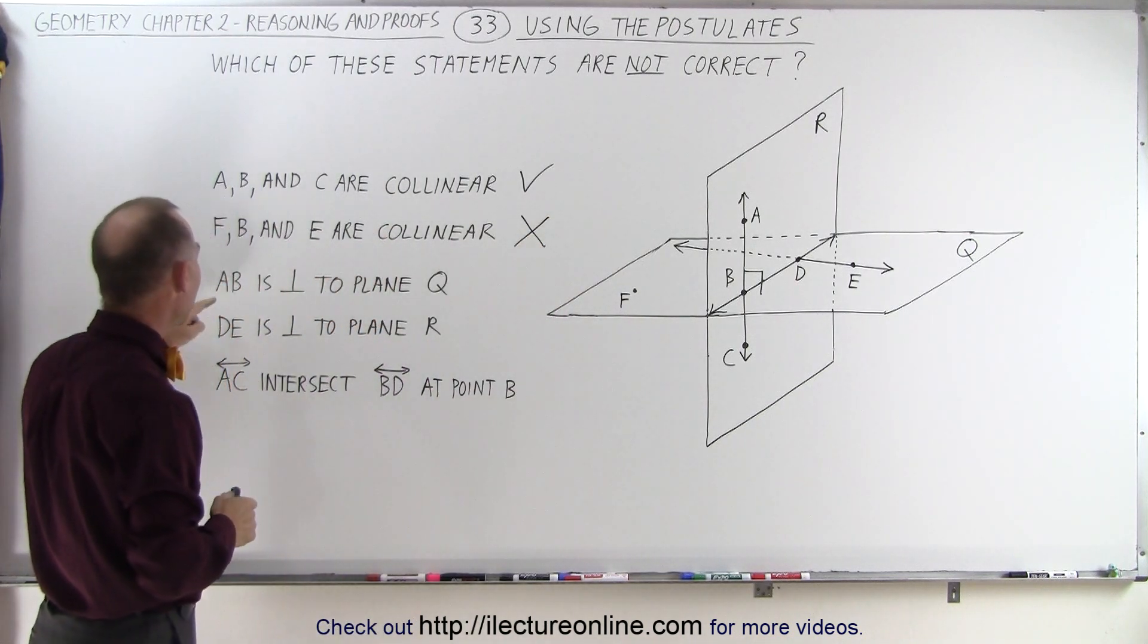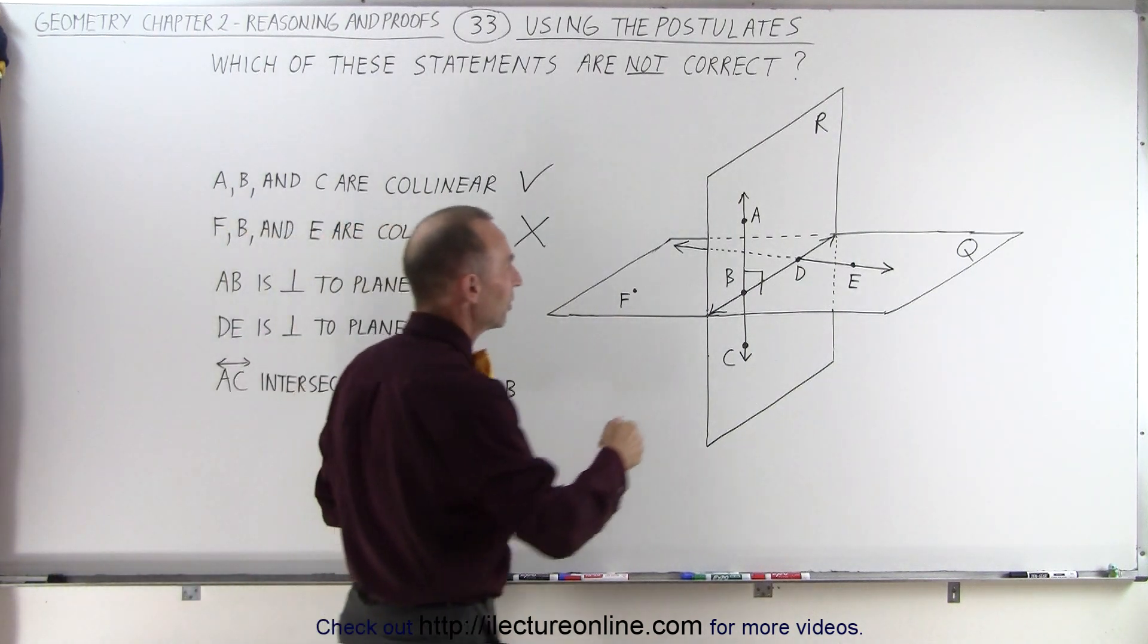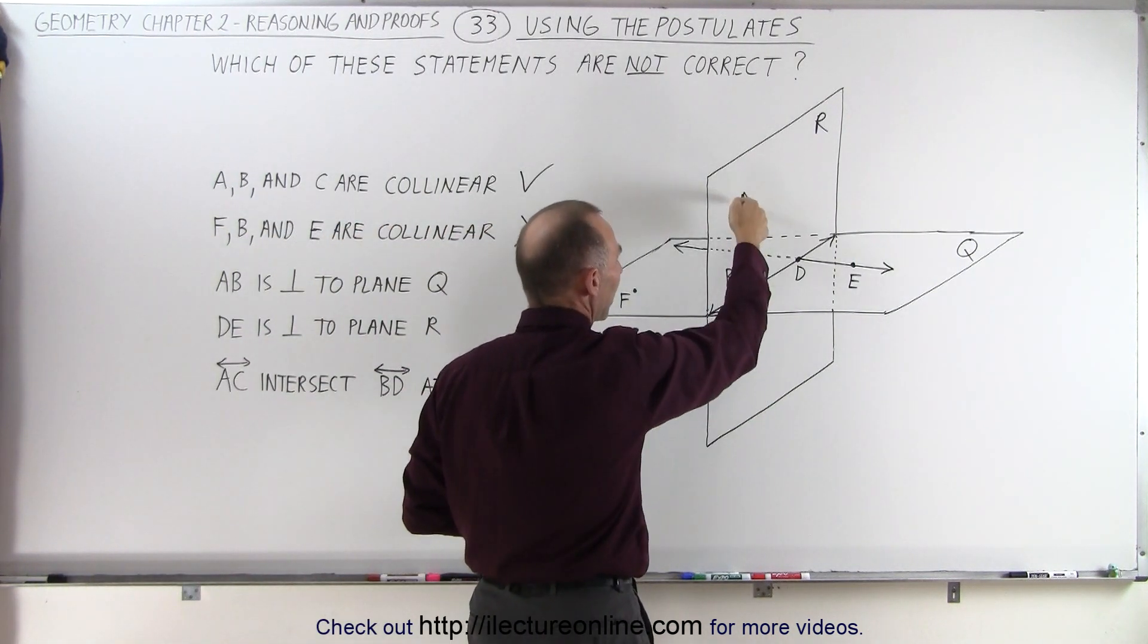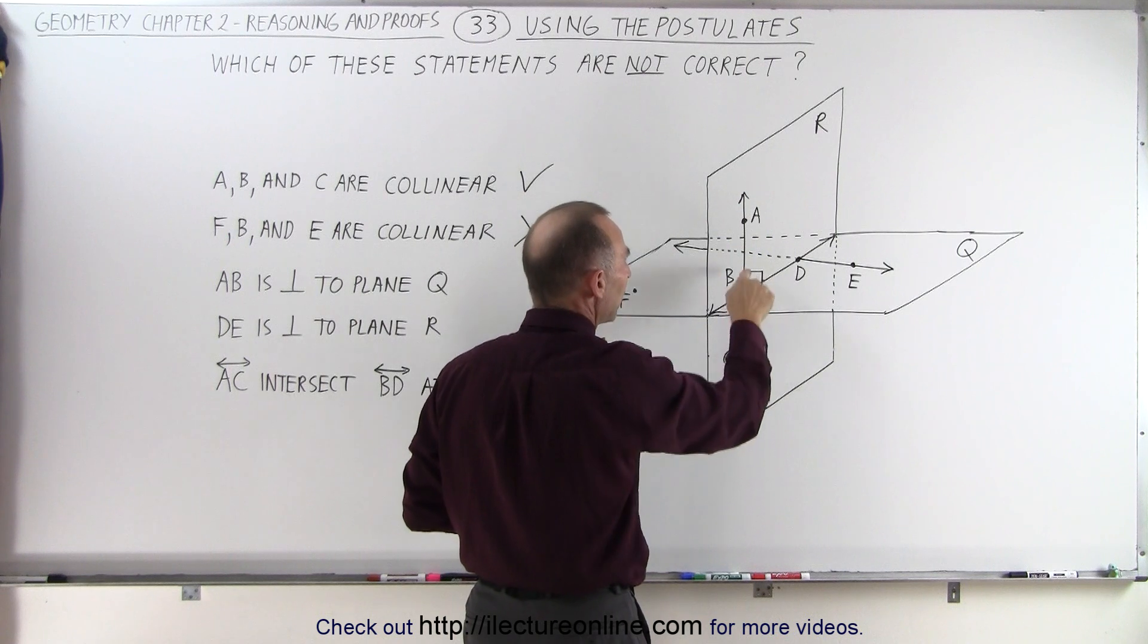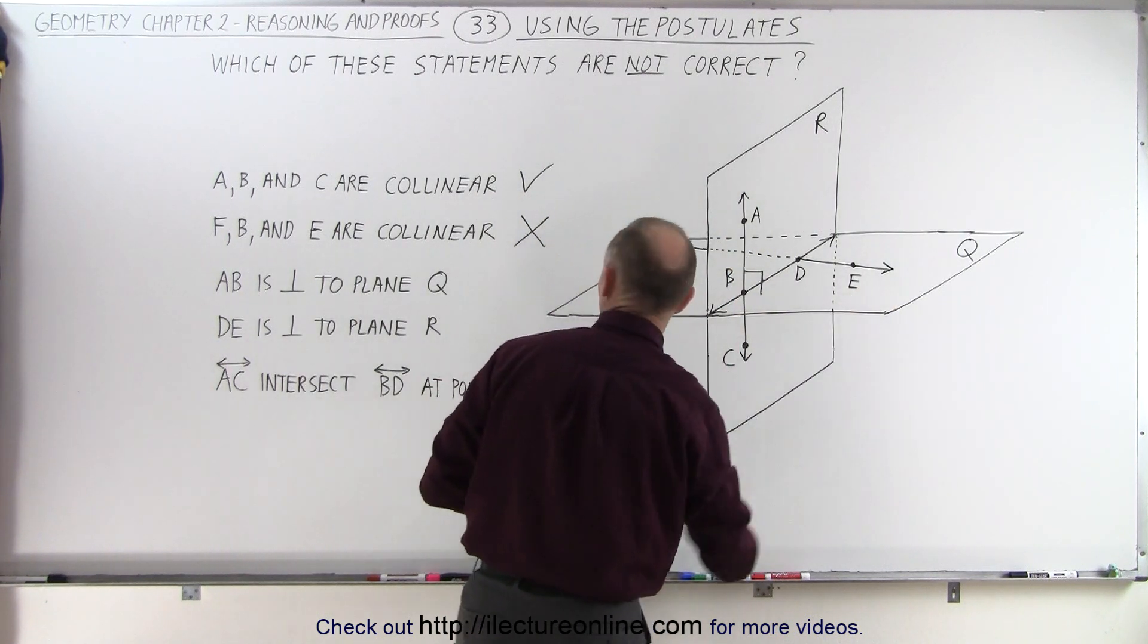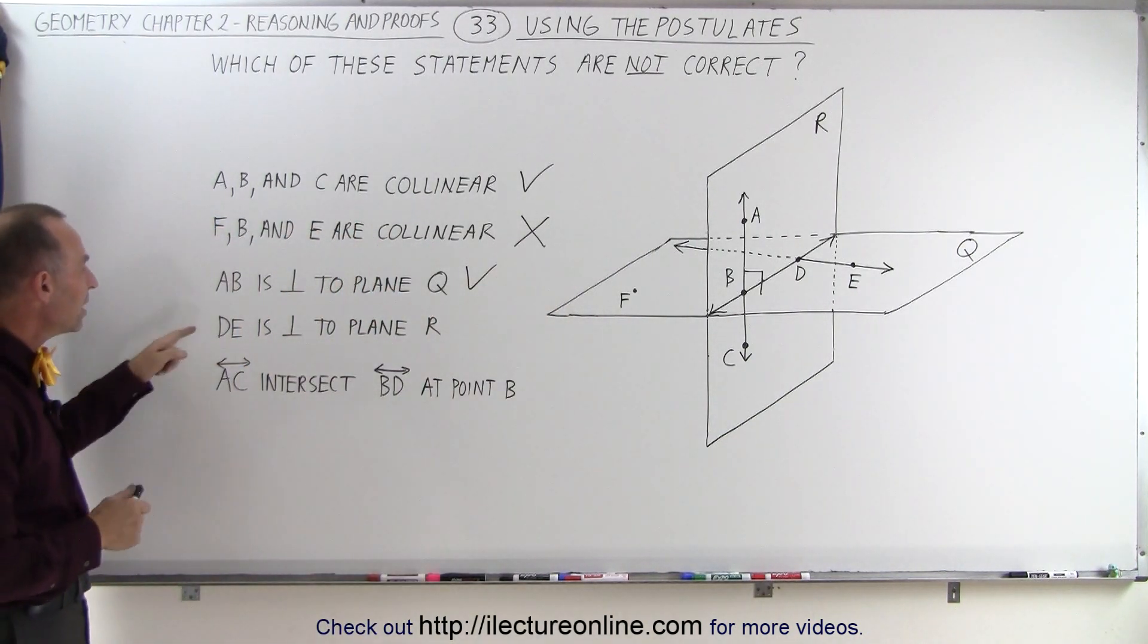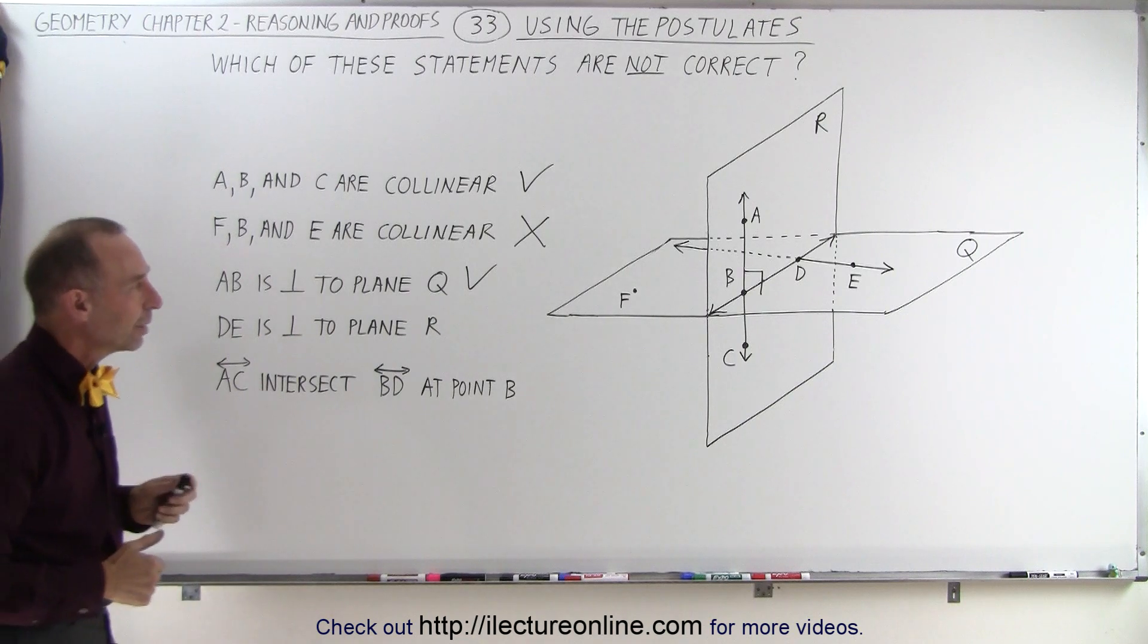The next statement: AB is perpendicular to plane Q. Here we can see that AB is on the line from A to B to C, and we have an indication that that line is perpendicular to plane Q, so that would then be a correct statement.